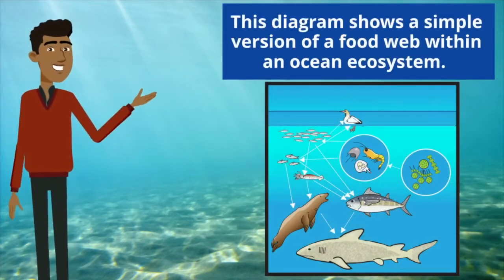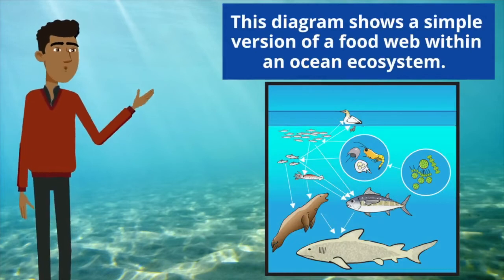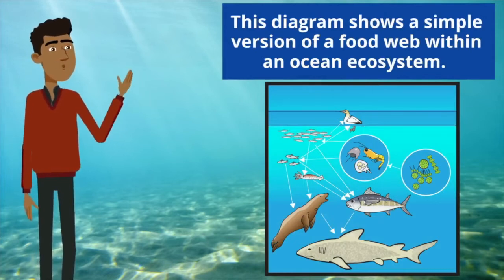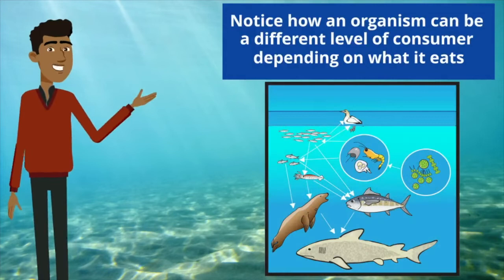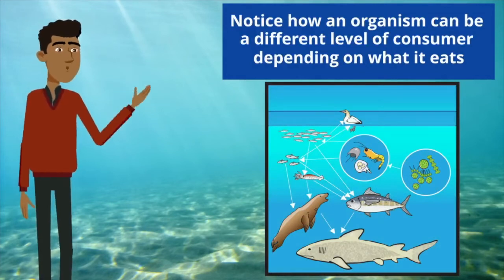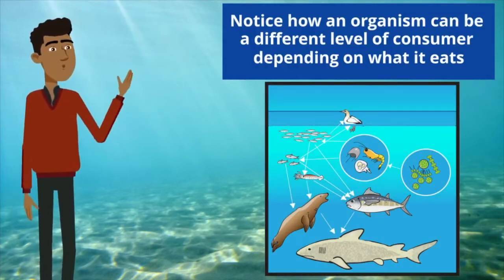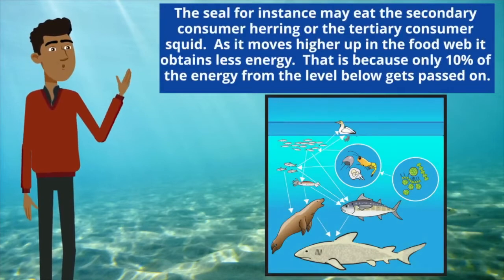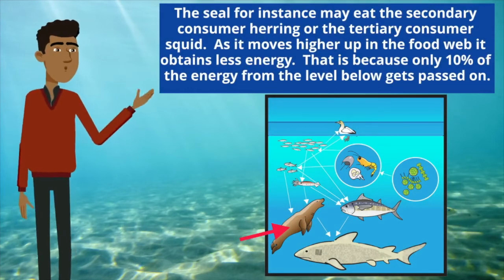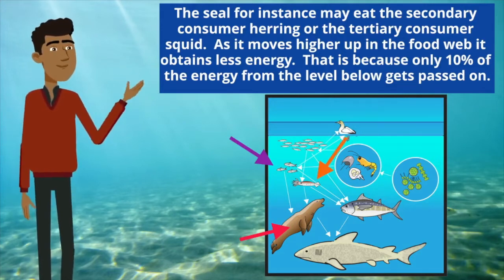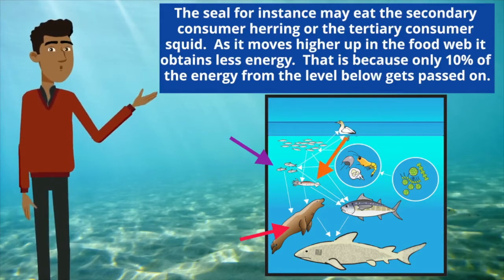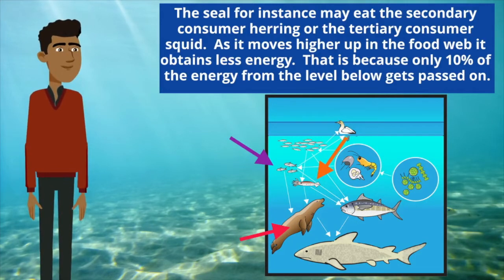This diagram shows a simple version of a food web within an ocean ecosystem. Notice how an organism can be a different level of consumer depending on what it eats. The seal, for instance, may eat the secondary consumer herring or the tertiary consumer squid. As it moves higher up in the food web, it obtains less energy, because only 10% of the energy from the level below gets passed on.